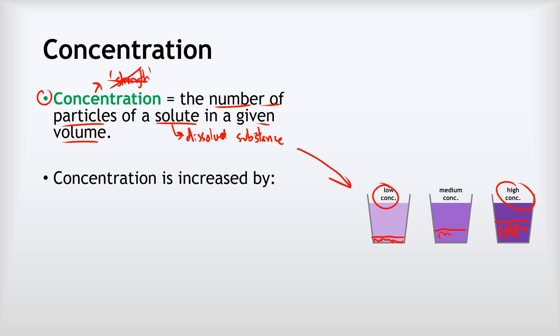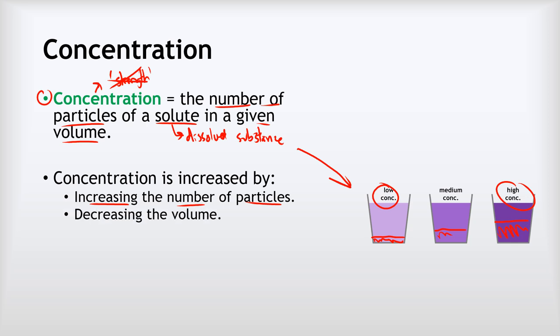Concentration can be increased by two things: one is increasing the number of particles present in our solution, and the second is by decreasing the volume that those particles are spread over. I'm going to refer to the number of particles as capital N and the volume as V.